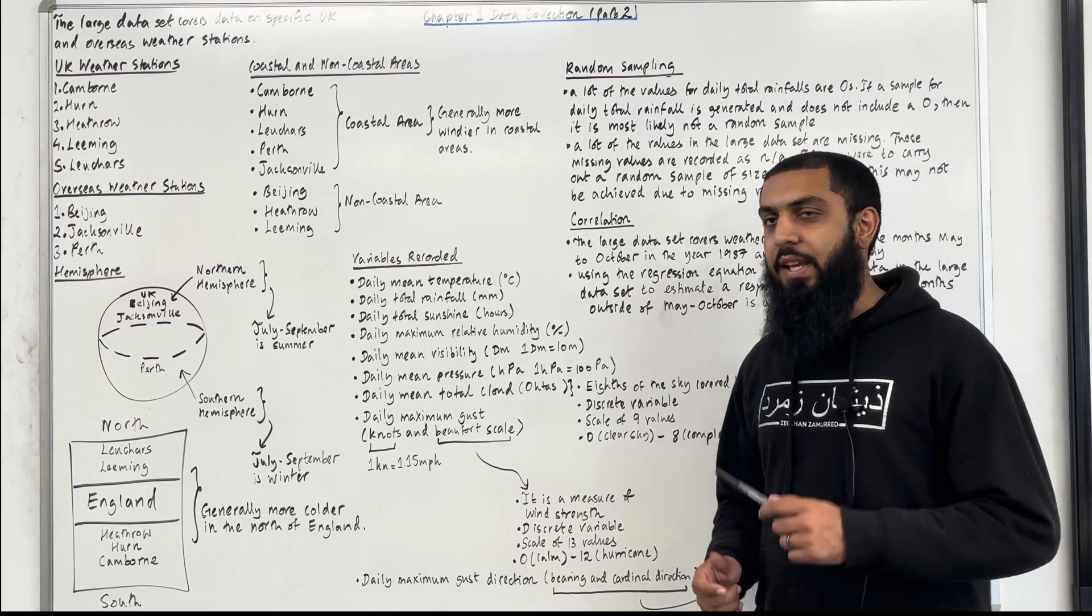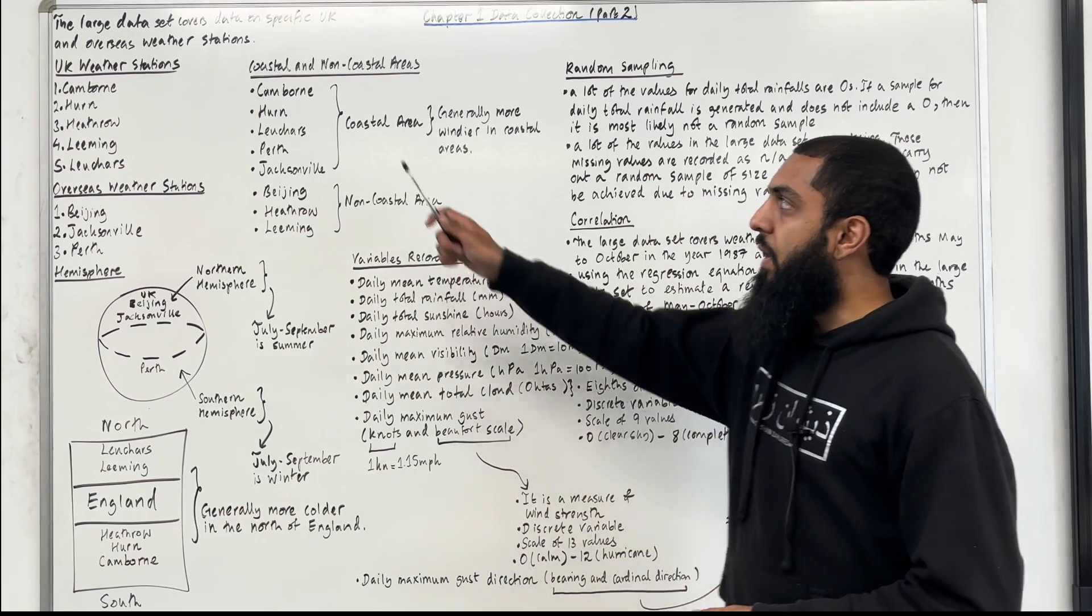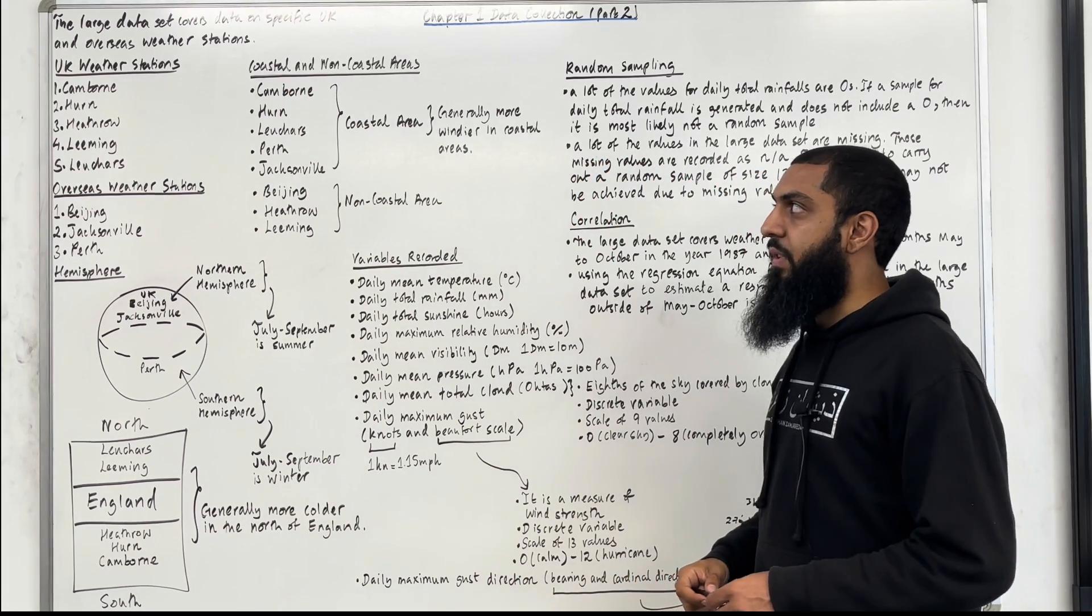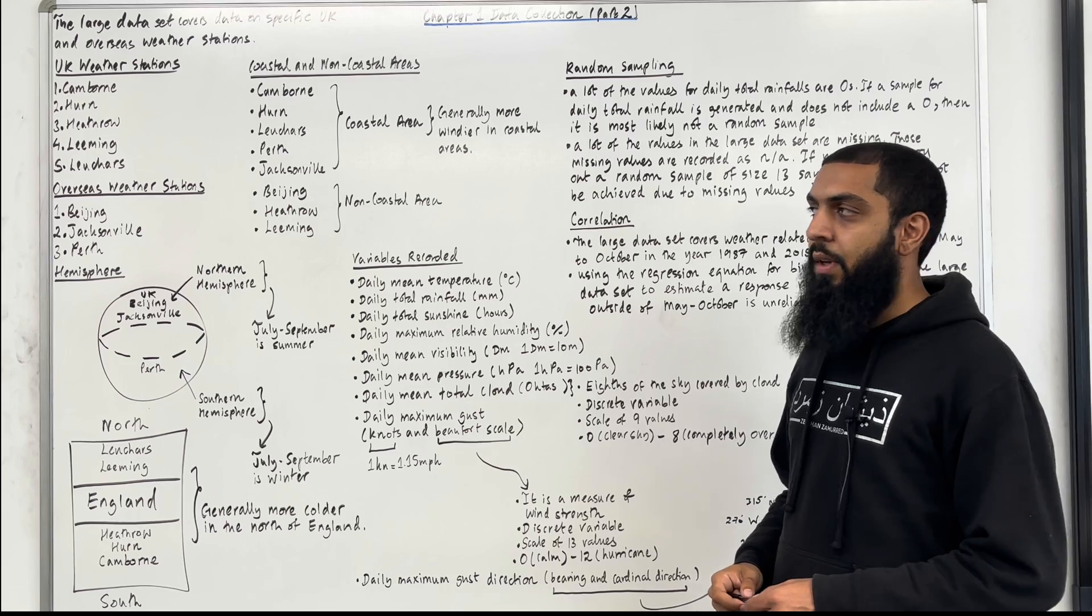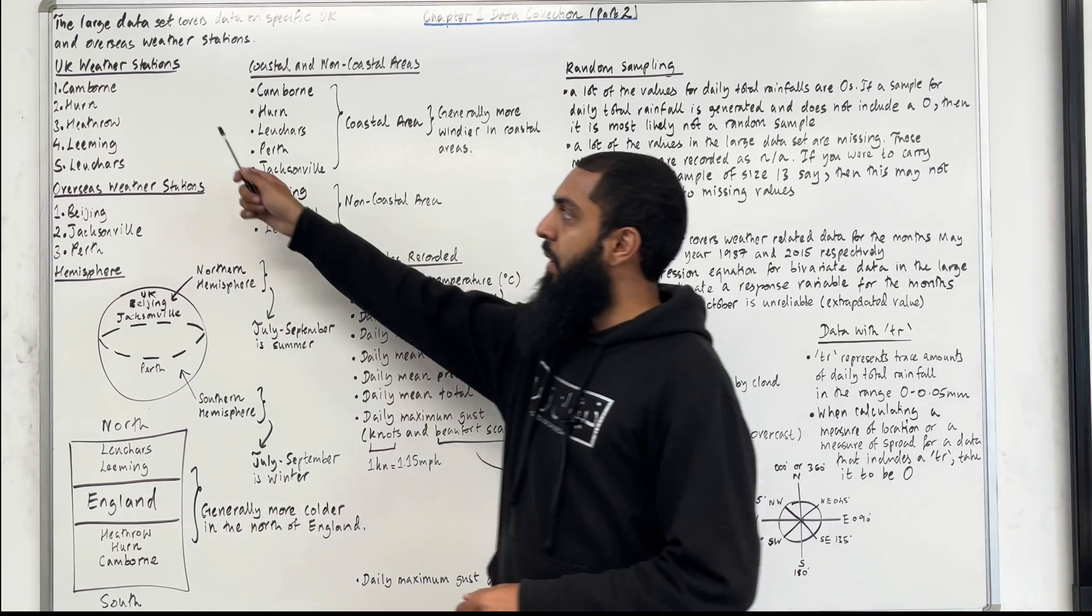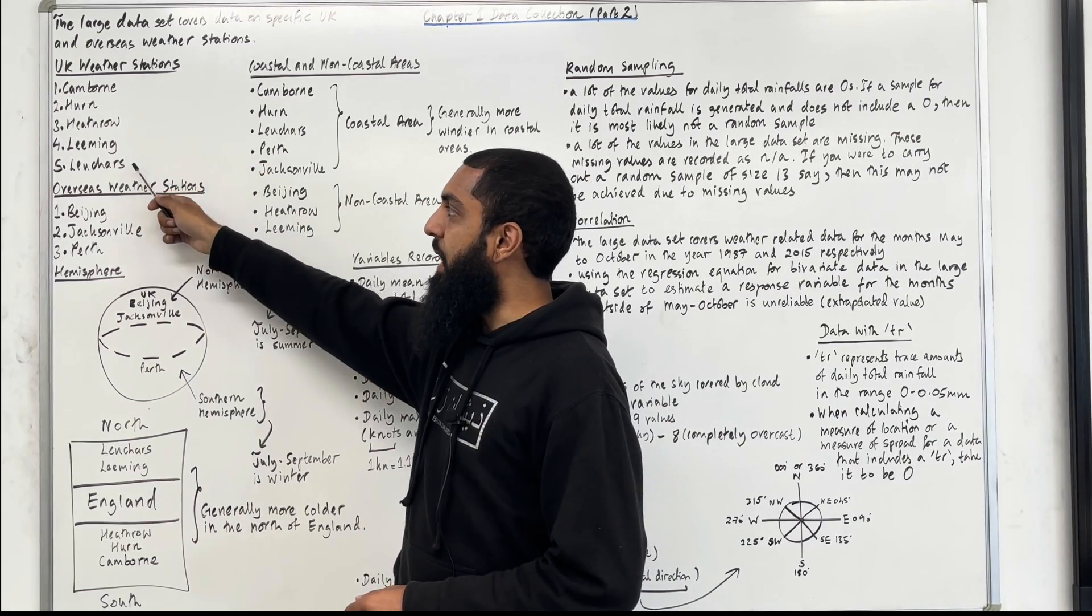Let's have a look at the key facts. The large data set covers data on specific UK and overseas weather stations. Let's begin with the UK weather stations. In the UK we have Camborne and Herne, Heathrow, Leeming and Leuchars.